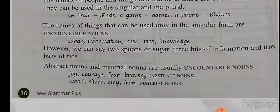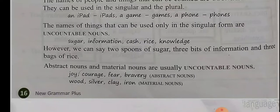You observe in the picture. However, we can say 'two spoons of sugar,' 'three bits of information,' and 'three bags of rice.' Abstract nouns and material nouns are usually uncountable nouns.